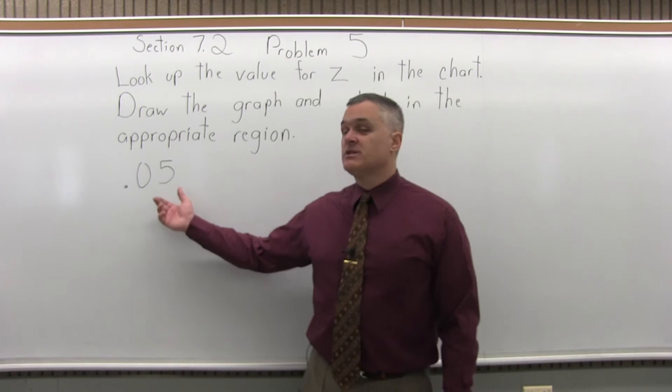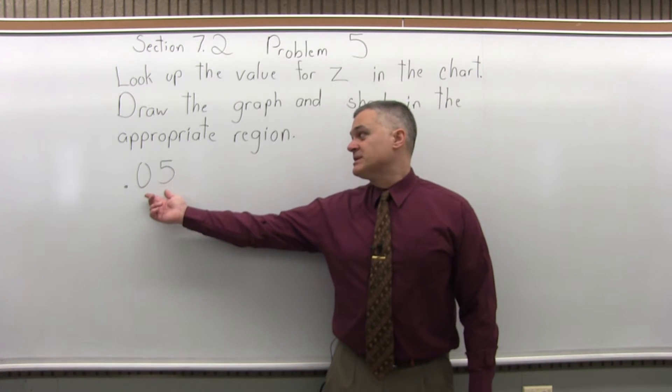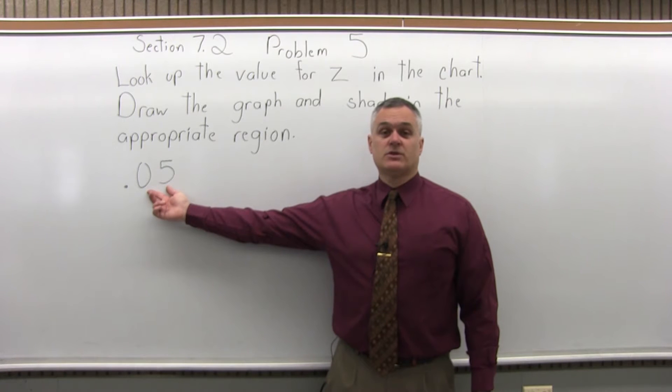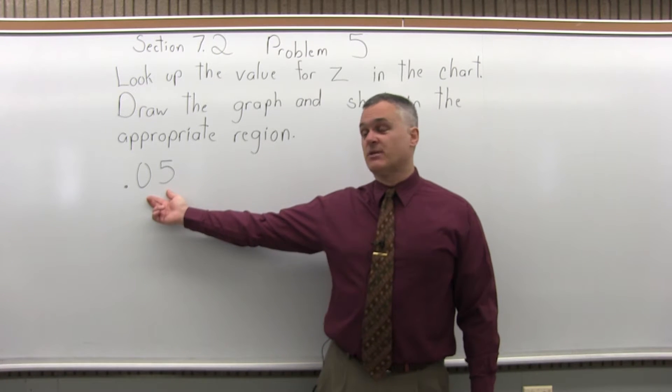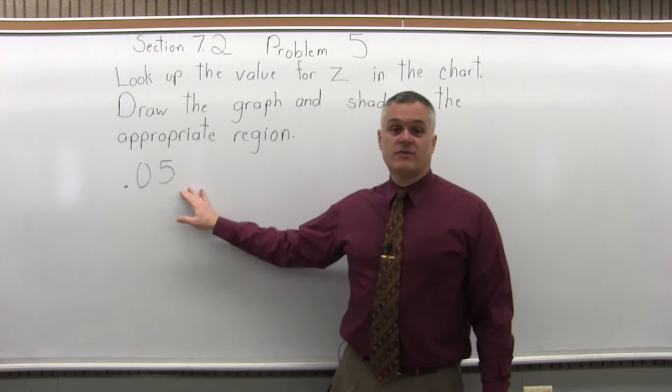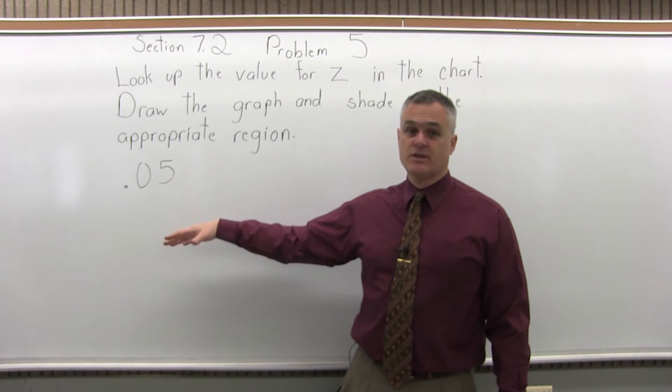So to look up .05 we go through a four step process. Step one of the four steps is to write the number to look up so that it has two places after the decimal. This one already has two places after the decimal so there is no work to do for step one, but sometimes you either have to fill in some zeros or round the number off. In this case we are ready to move right on to step two.